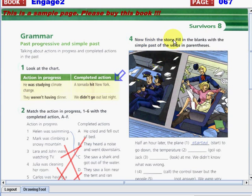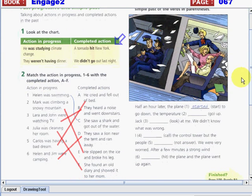Now finish the story and fill in the blanks with the simple past of the verbs in parenthesis. Try to observe first what happened. Half an hour later, the plane started to go down. The temperature went up. We have here our simple past: start, go, look, call, not answer, heat.